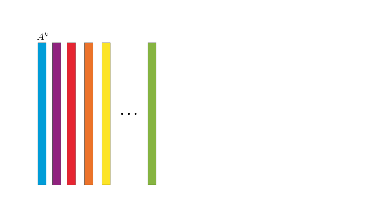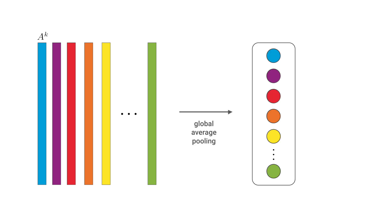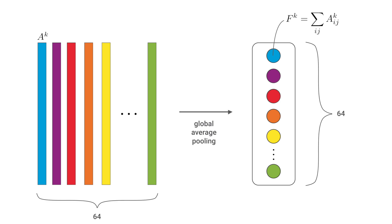The colorful bars represent the feature maps AK in one of the layers of the convolutional neural network. GAP produces one value FK for each map by summing all the elements. In this case, we go from 64 feature maps to 64 values, significantly reducing the dimensionality of the network.